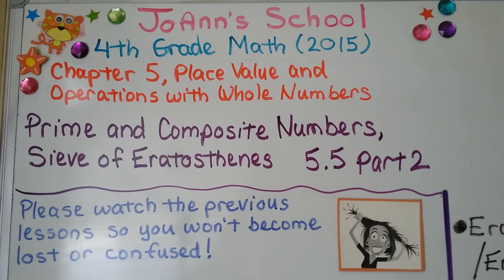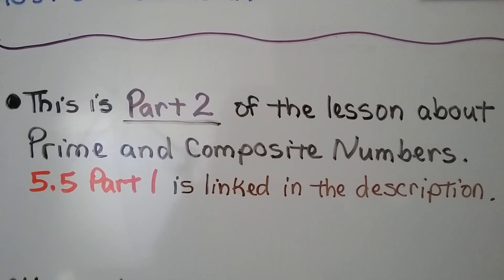This is 5.5 part 2. It's about prime and composite numbers and the sieve of Eratosthenes. This is part 2 of a lesson about prime and composite numbers, and 5.5 part 1 is linked in the description.